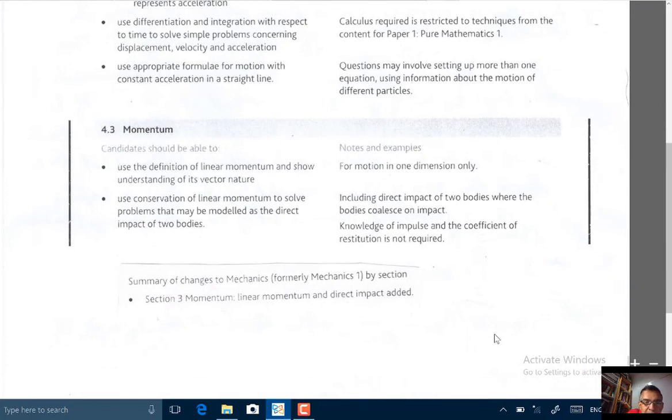First off, let's pick a statement from the summary of the CIE syllabus. Summary of changes to mechanics, formerly mechanics 1 by section. Section 3, momentum, linear momentum and direct impact added. So linear momentum and direct impact has been added.